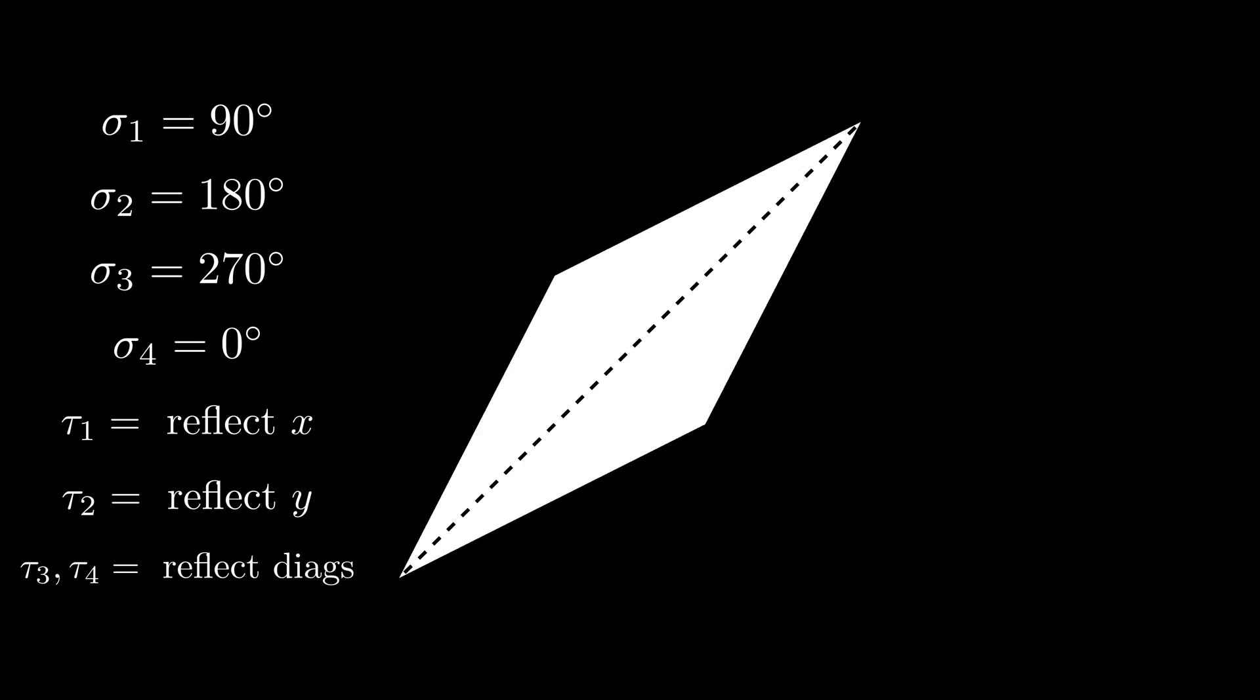And if the bottom of the board was also the same color, in addition to these rotations, we can also do a reflection across the x-axis, a reflection across the y-axis, and a reflection across each of the diagonals, while also preserving the original structure.